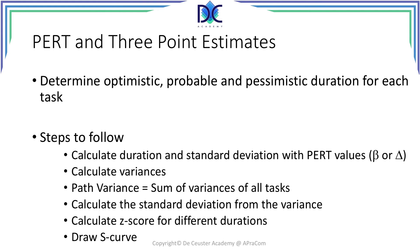From the standard deviations, we can calculate the variances, and the variances are equal to the square of the standard deviations. The variance of the path — the critical path — is the sum of the variances of all tasks. From the path variance, we can calculate the standard deviation of the path by taking the square root of the variance. Depending on the different durations, we can calculate the z-score, calculate the probability, and then draw the S-curve, which links duration and probability.